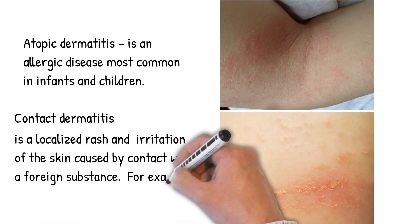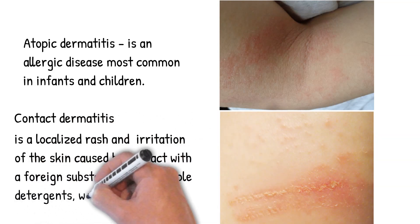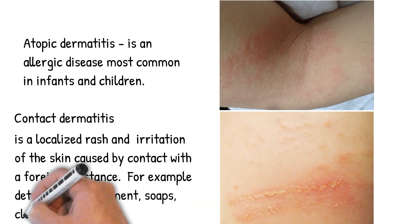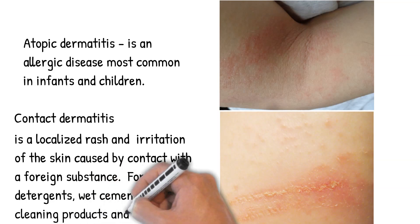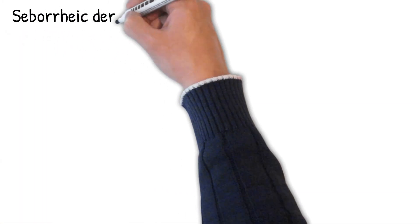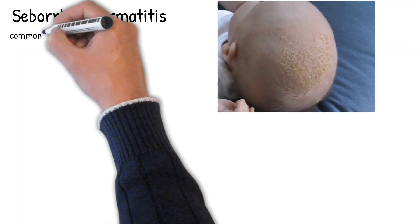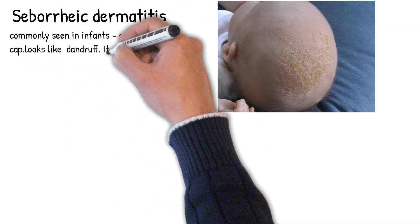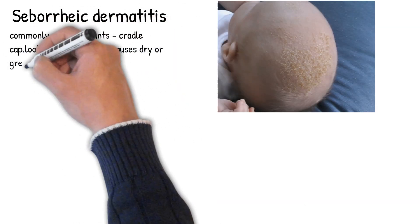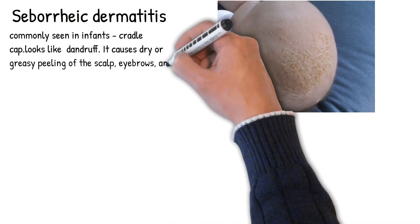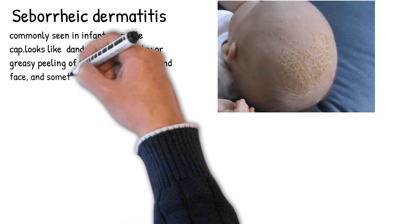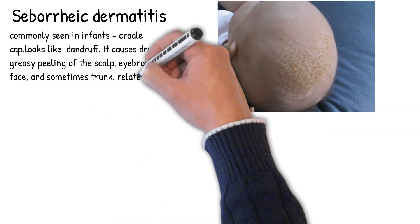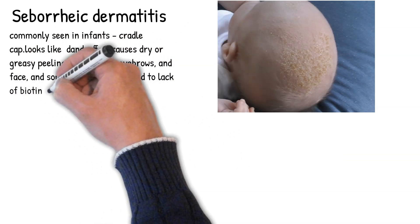Examples of contact irritants include detergents, wet cement, soaps, cleaning products, and others. Seborrheic dermatitis, commonly seen in infants as cradle cap, looks like dandruff. It causes dry or greasy peeling of the scalp, eyebrows, face, and sometimes trunk. It is related to lack of biotin and is often curable.